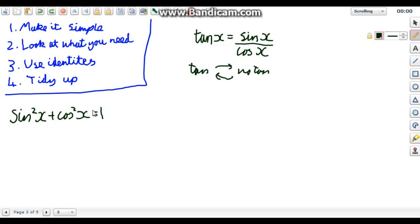Now this second identity, this is the one that swaps between sine and cos and back the way. So if you've got cos and you need sine, you can use this. If you've got sine and you want cos, you can use this.